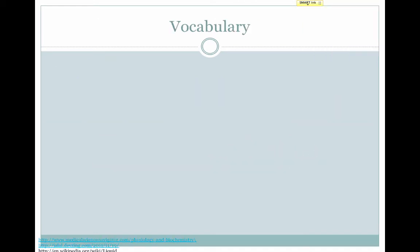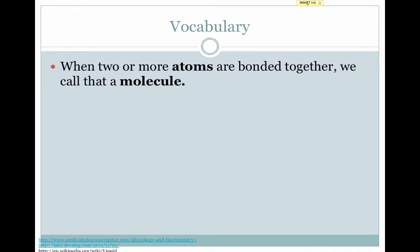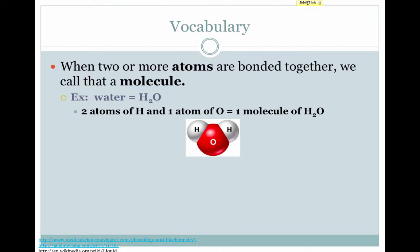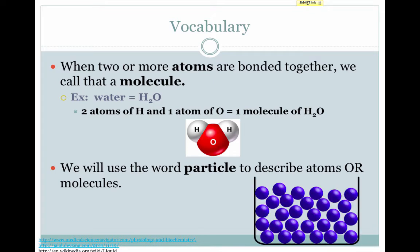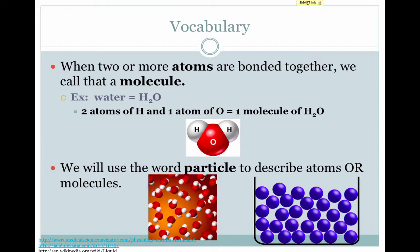Let's get some vocabulary straight before we start solving some problems. When two or more atoms are bonded together, we call that a molecule. For instance, a water molecule is made up of two atoms of hydrogen and one atom of oxygen. Together, those give us one molecule of water. For simplicity's sake, we'll use the word particle to mean atoms or molecules. Particle is a broad term and can mean either — the particles can be atoms or the particles can be molecules.